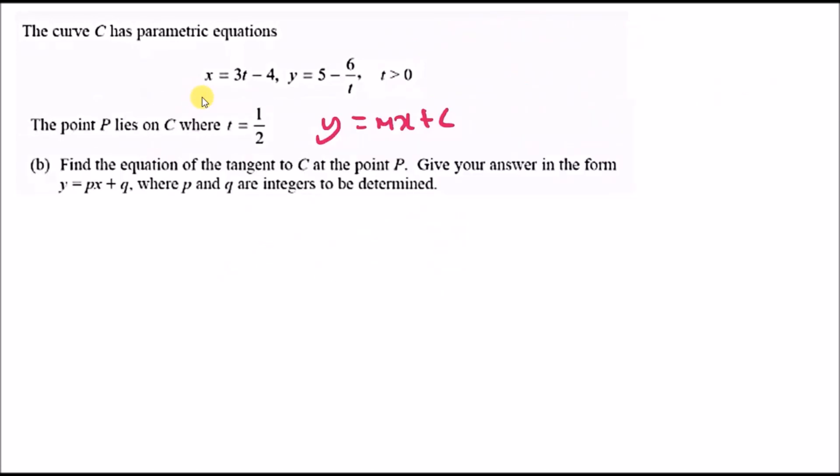We have the gradient equation dy over dx, and we know the value of t. So t is half, so we can say 2 over half squared is the gradient. So m equals 2 over half squared, and if you put that in a calculator you should get 8.